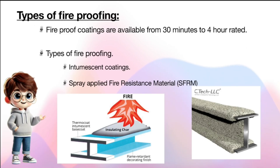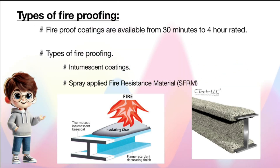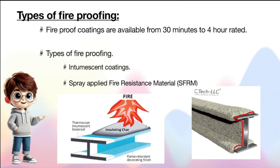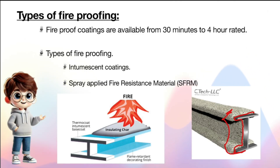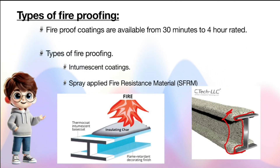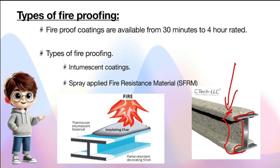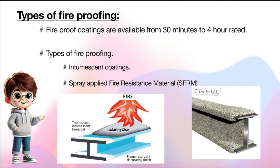For spray applied fire resistance material, we apply a layer of cement slurry with high pressure jets on the surface of steel. This is very cost effective, but the main disadvantage of this type of coating is that the weight of the member will also be increased with this coating.